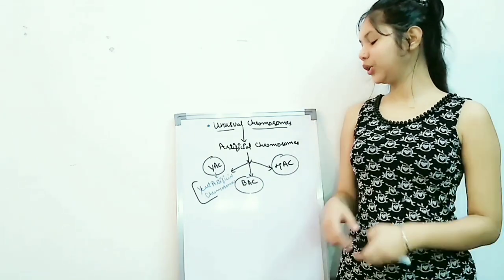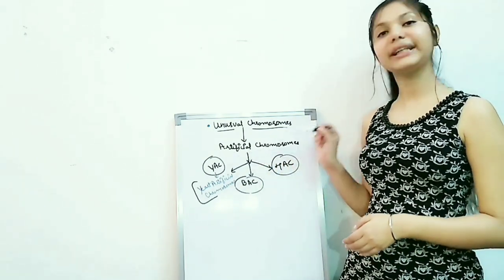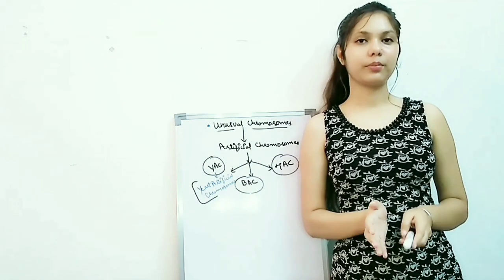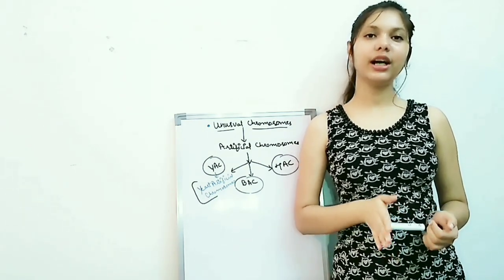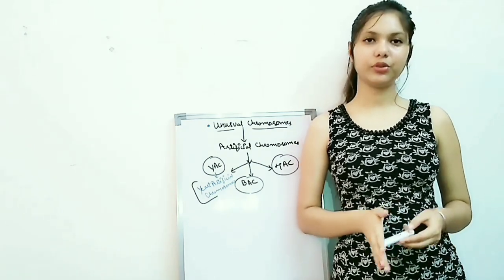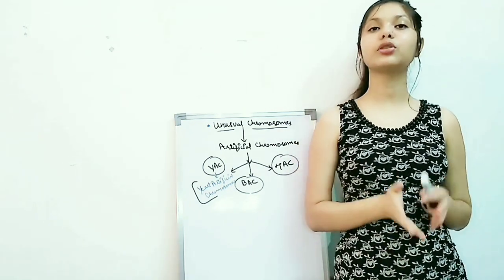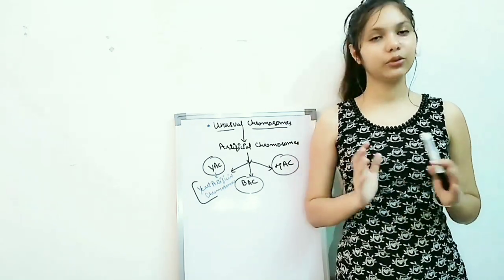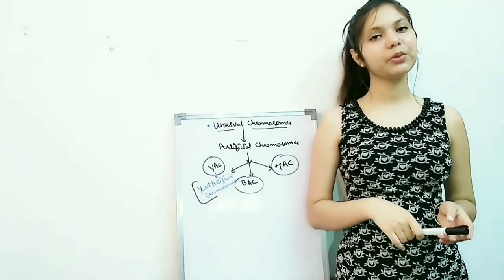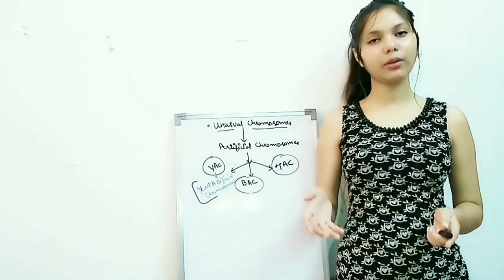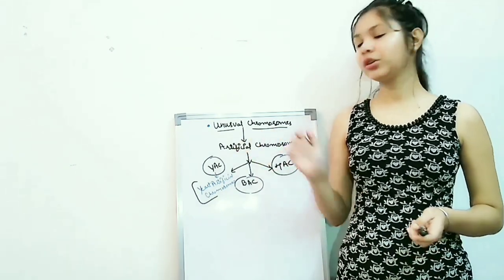In today's video, I will be explaining about the topic of artificial chromosomes. Unusual chromosomes are those chromosomes whose size and structure are very much different from normal-looking chromosomes. That is why they are termed unusual chromosomes.